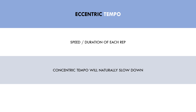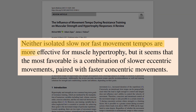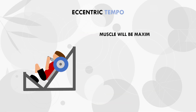The next factor to consider for lifting technique is eccentric tempo. This refers to the speed or duration of the eccentric portion of the lift, which is when the muscle lengthens under load. We are specifically referring to eccentric tempo because we have less control over concentric tempo - regardless of what speed we perform the concentric with, it will inevitably slow down as we near the point of failure. Generally, the research finds that lifting tempo doesn't have any significant impact on hypertrophy outcomes. The most recent meta-analysis found that neither slower nor faster lifting tempos were significantly superior to the other.